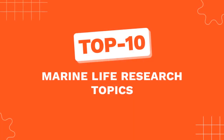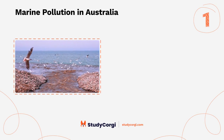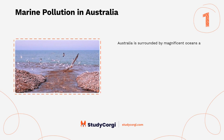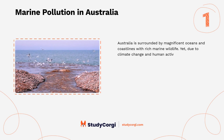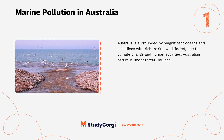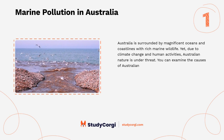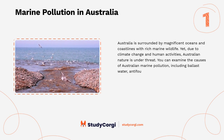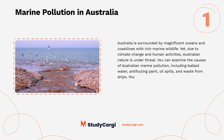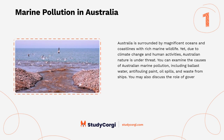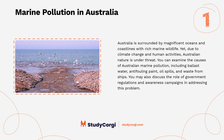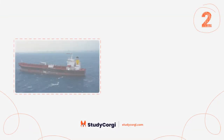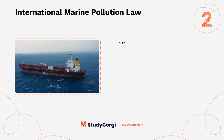Top 10 marine life research topics. Marine pollution in Australia: Australia is surrounded by magnificent oceans and coastlines with rich marine wildlife, yet due to climate change and human activities, Australian nature is under threat. You can examine the causes of Australian marine pollution, including ballast water, anti-fouling paint, oil spills, and waste from ships. You may also discuss the role of government regulations and awareness campaigns in addressing this problem.